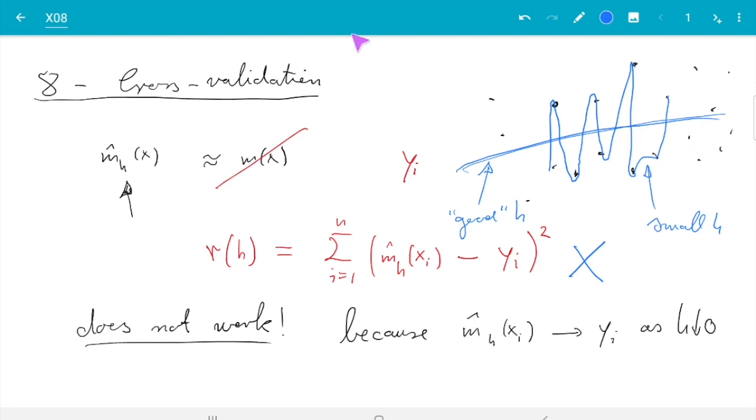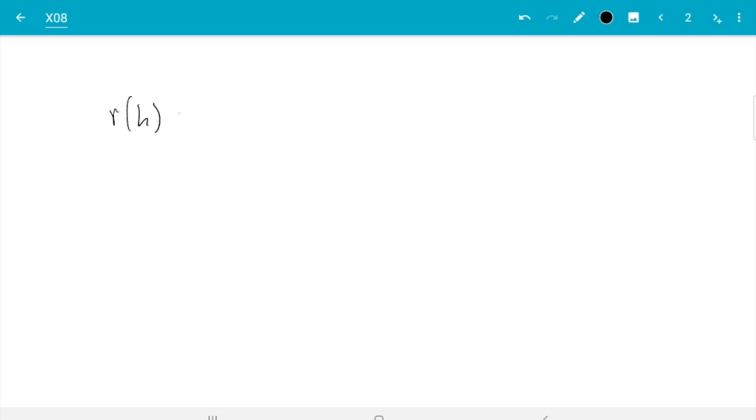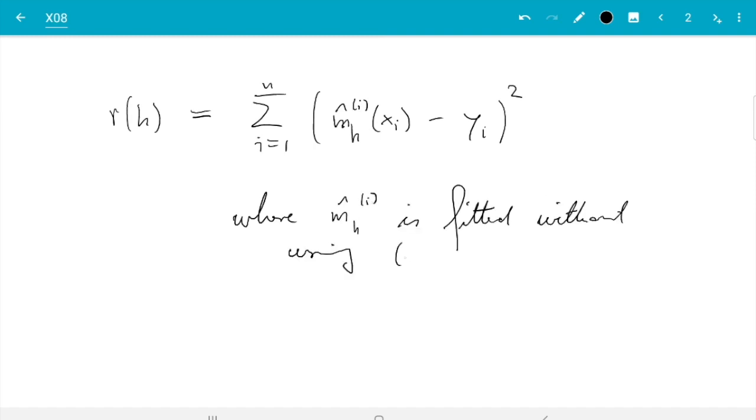The solution is rather simple, and that's called cross-validation. We minimize r(h) equals sum from i=1 to n of (m̂ₕⁱ(xᵢ) - yᵢ)², where m̂ₕⁱ is the model with index i, which is fitted to all the data except for the pair (xᵢ, yᵢ). Now it cannot overfit anymore because it doesn't know yᵢ. The fitting happened without using (xᵢ, yᵢ). This approach will give a much better result.